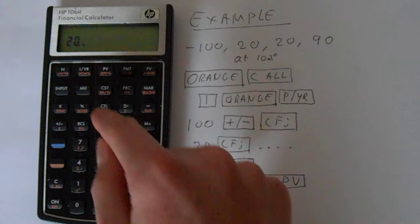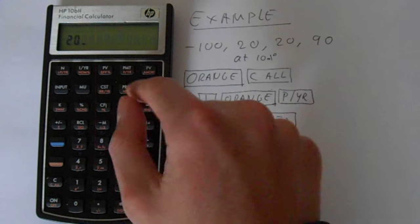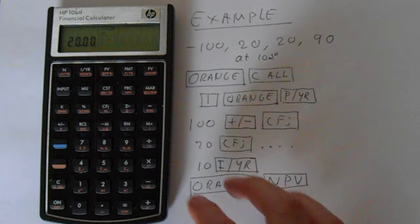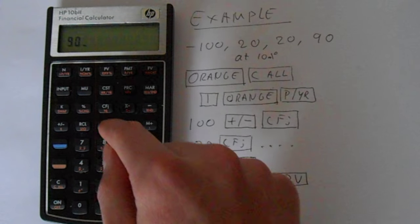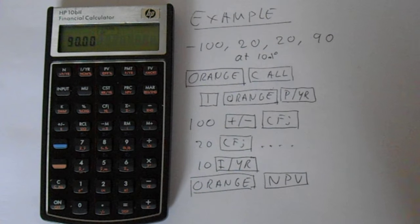Then go 20, press that, then 20 again. You can use the orange and then the NJ key to do this. Then our last cash flow, 90, and then that goes in there, and that counter keeps track. That's basically the J number.